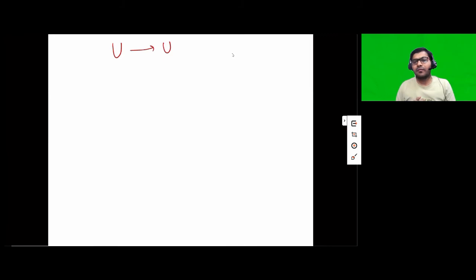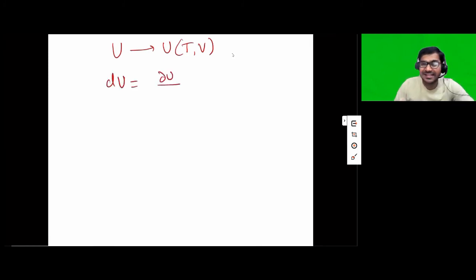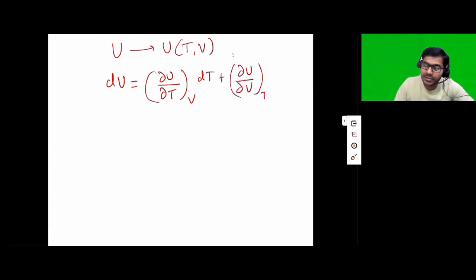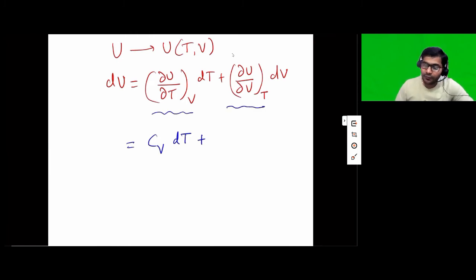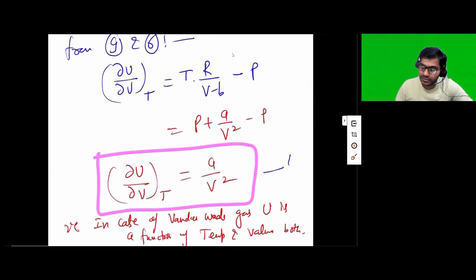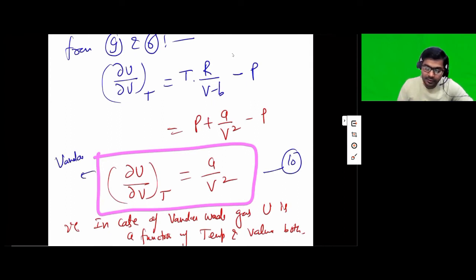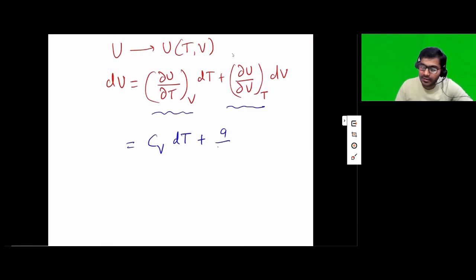We can do a little more mathematics. Since U is a function of both temperature and volume for the Van der Waal gas, the exact differential of U is: dU equals del U by del T at constant V times dT plus del U by del V at constant T times dV. From basic thermodynamics, del U by del T at constant V is the specific heat at constant volume Cv. So dU equals Cv dT plus del U by del V at constant T times dV. From the Van der Waal result, del U by del V at constant T equals A/V², so dU equals Cv dT plus A/V² dV.